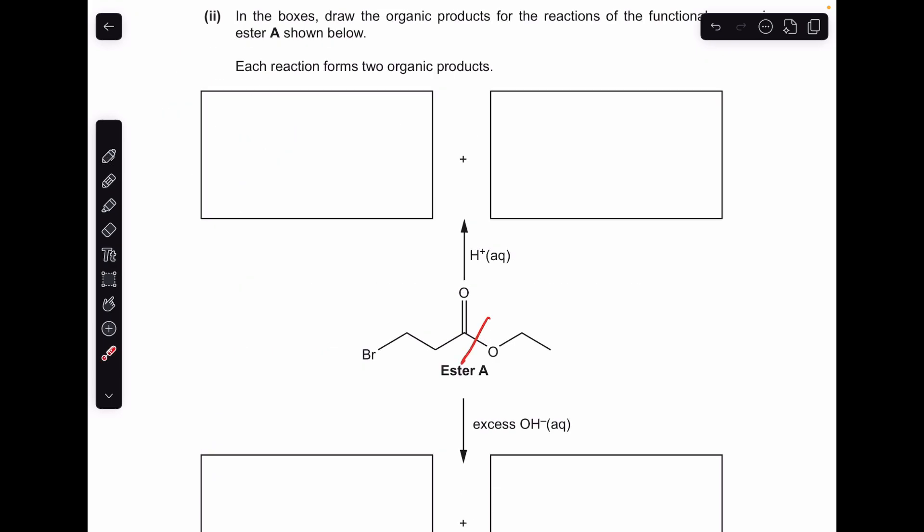Moving on to the next part, we're reacting the ester with aqueous acid and aqueous alkali. The red bond there just signifies the bond that's going to break in these hydrolysis reactions, which is an answer to the next question. When we hydrolyse an ester by acid hydrolysis, this part becomes an alcohol and this part here becomes a carboxylic acid. The products of that reaction are going to be those there.